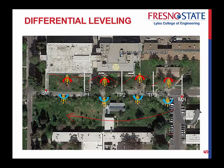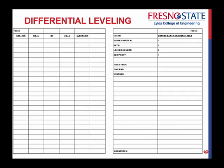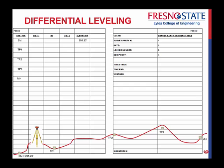So let's take a look at this example. I have a benchmark, three turning points, and a manhole as my target. The elevation of the benchmark is 205.23 — this is how you write your notes and keep track of information. Set up your instrument, put the rod on the benchmark because that's where the elevation is coming from, and we're trying to establish an elevation on TP1 first. You get a backside reading of 4.42, which goes in the right column. From that you establish your height of instrument: 205.23 plus 4.42 equals 209.65.